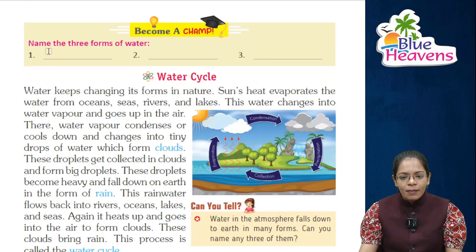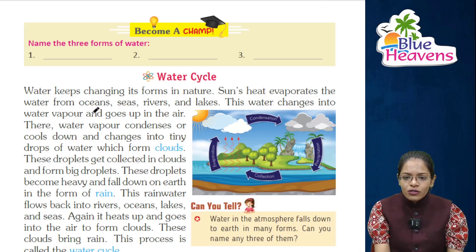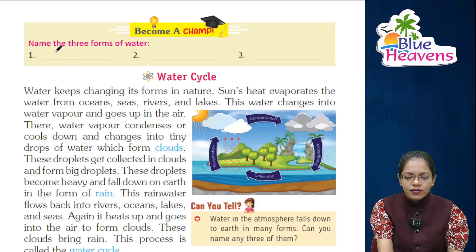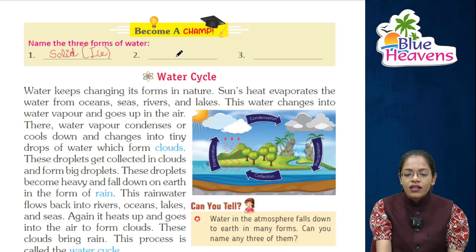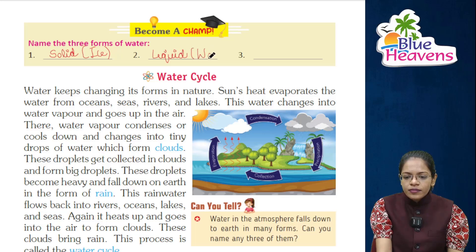Now let's become a champ. Name the three forms of water. The three forms of water are: solid — that means ice; liquid — that is water; and gaseous — that is steam.